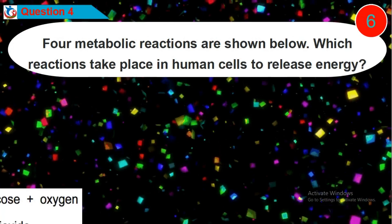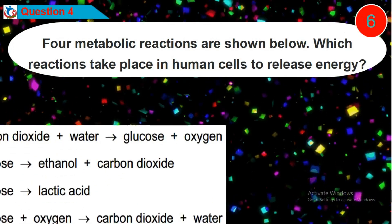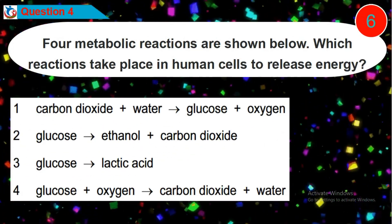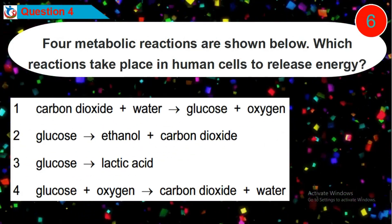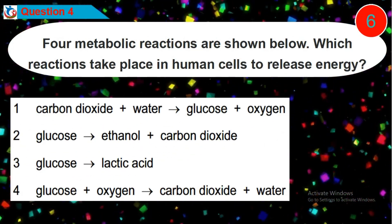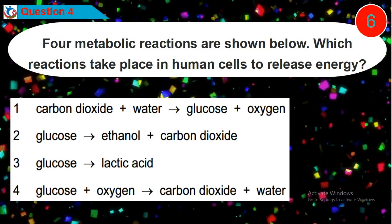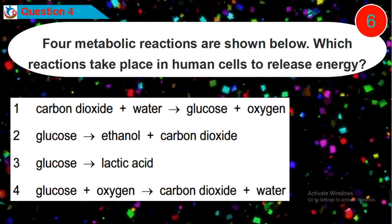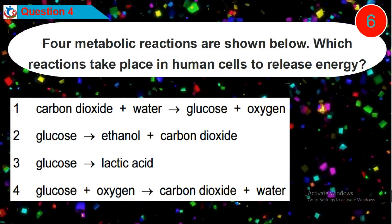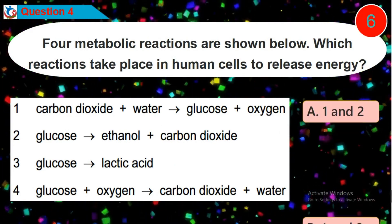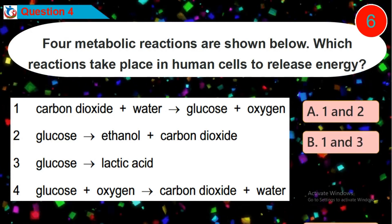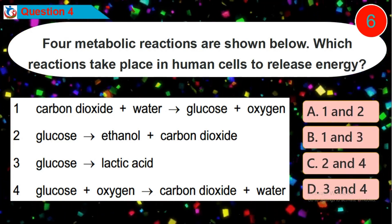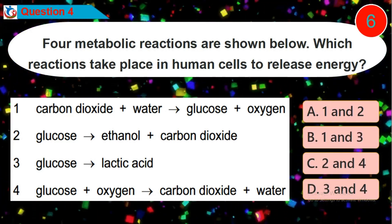Question 4: Four metabolic reactions are shown below. Which reactions take place in human cells to release energy? Is it option A, B, C, or D?